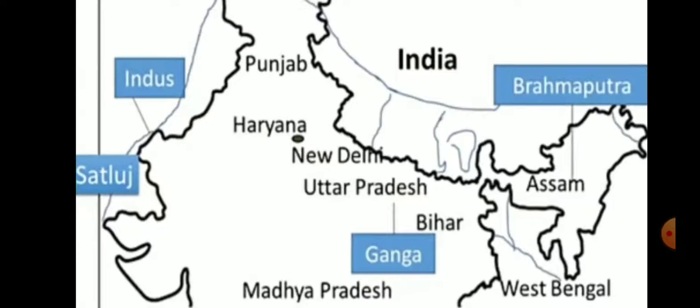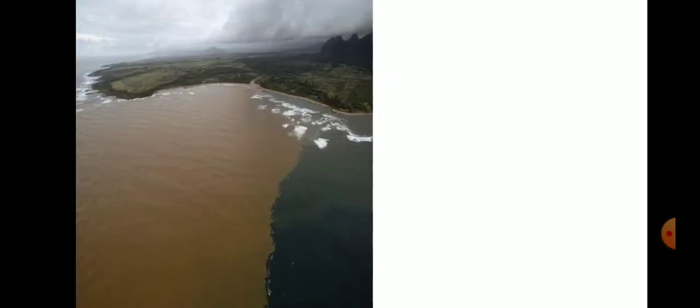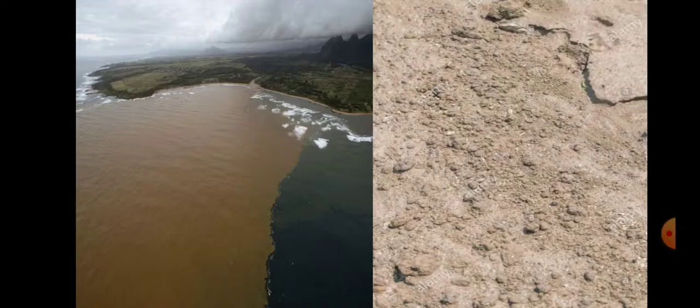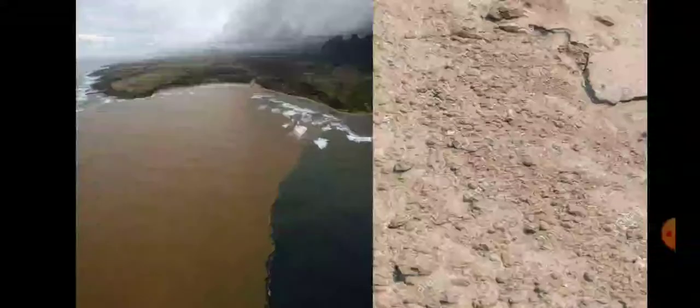Many rivers, like the Ganga, Brahmaputra, and Satlaj, flow through the plains. The Northern Plains are formed by the fine silt brought down by the rivers originating in the Himalayas. A lot of rivers originate from the Northern Mountains and as they flow down into the plain areas, they bring sand and silt with them, and when the sand and silt get deposited at the banks of the rivers, these plains are formed.